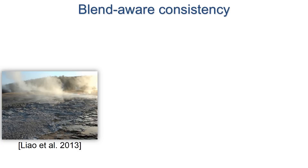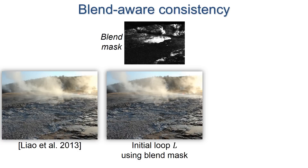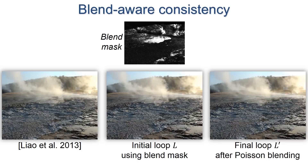In prior work, large portions of the scene may become frozen when the input video has low-frequency changes. We create a blend mask that enables greater dynamism by recognizing that many discontinuities can be smoothed away by the subsequent Poisson blending, resulting in a better overall loop.